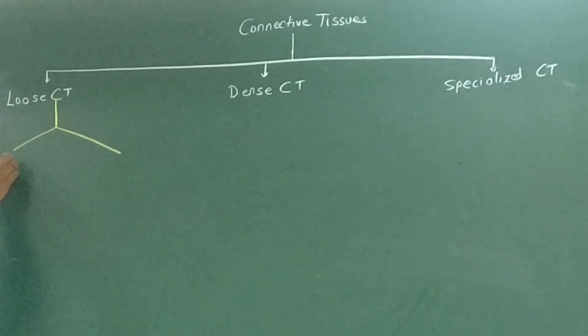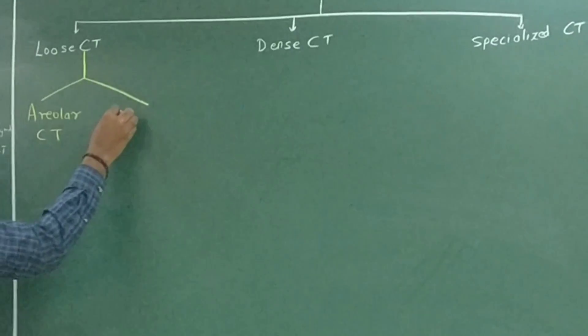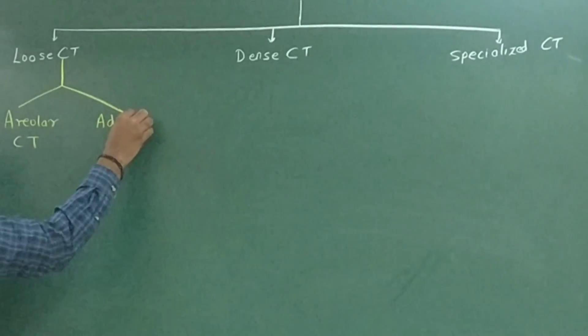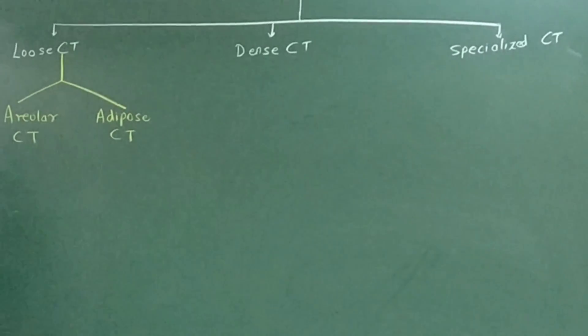Loose connective tissue is further divided into two types: it includes areolar connective tissue and adipose connective tissue. Areolar means small space, and adipose means fatty tissue.